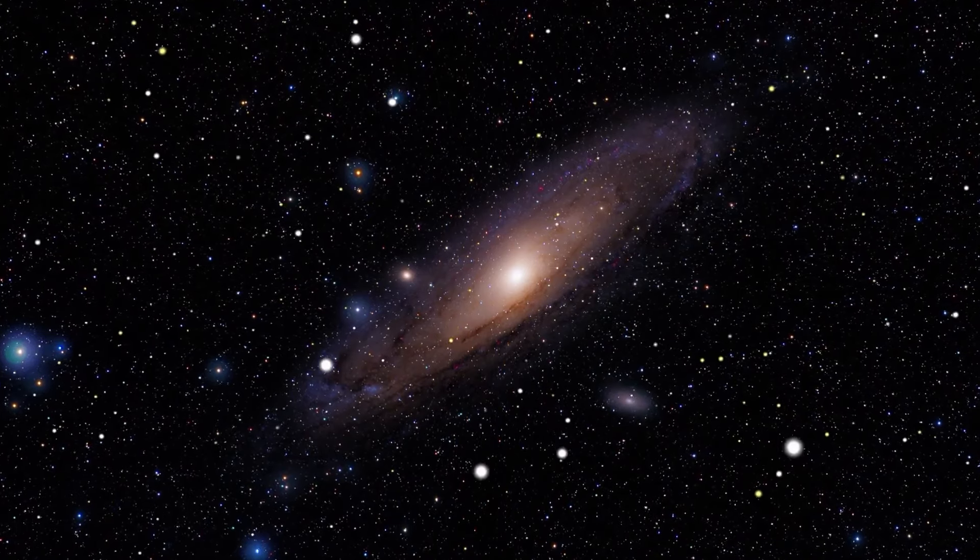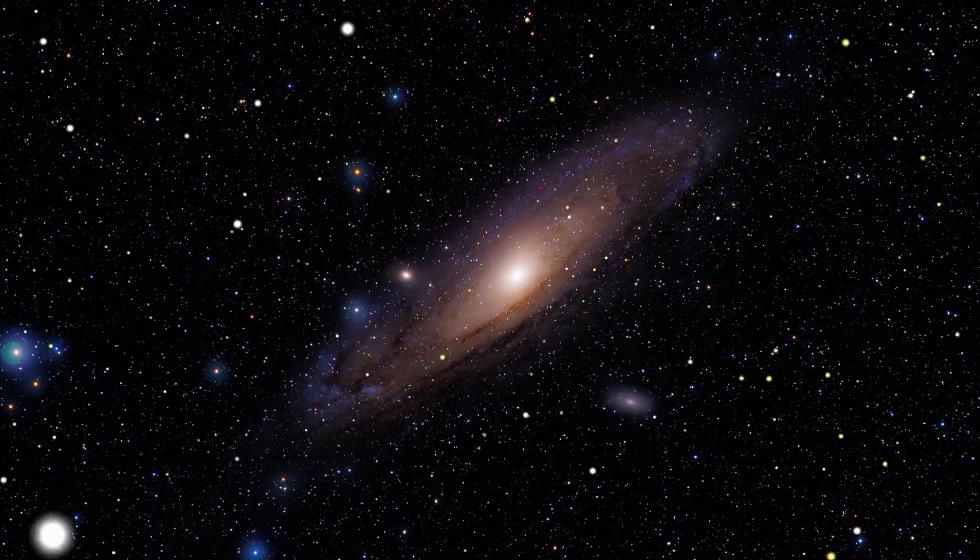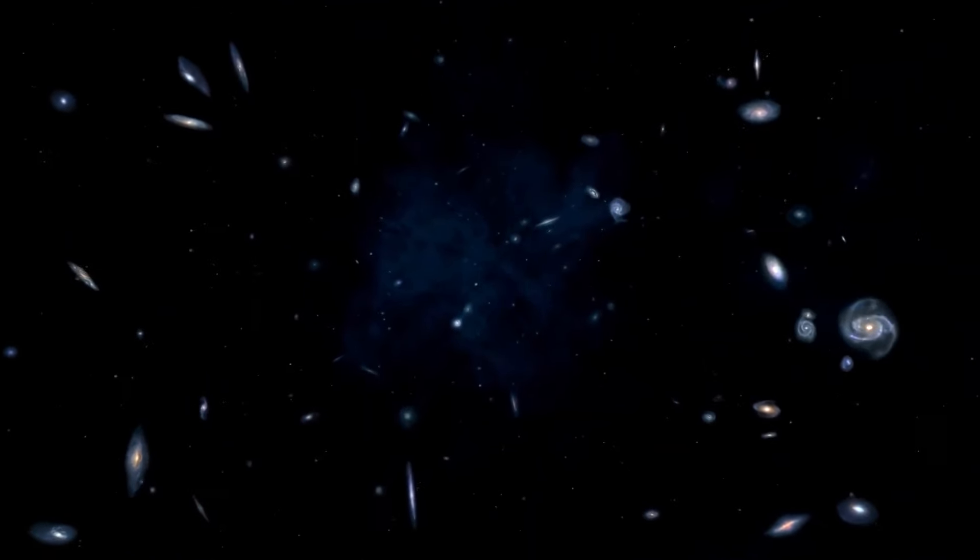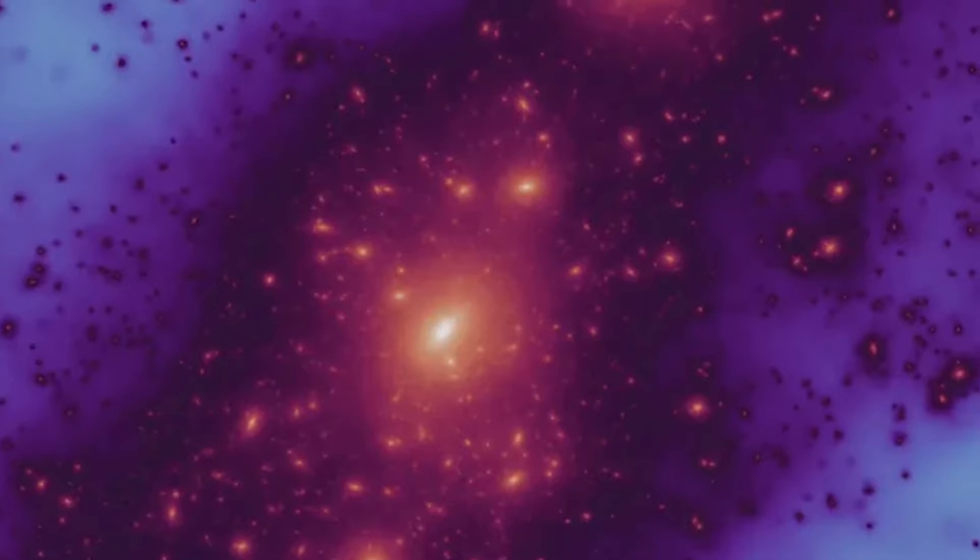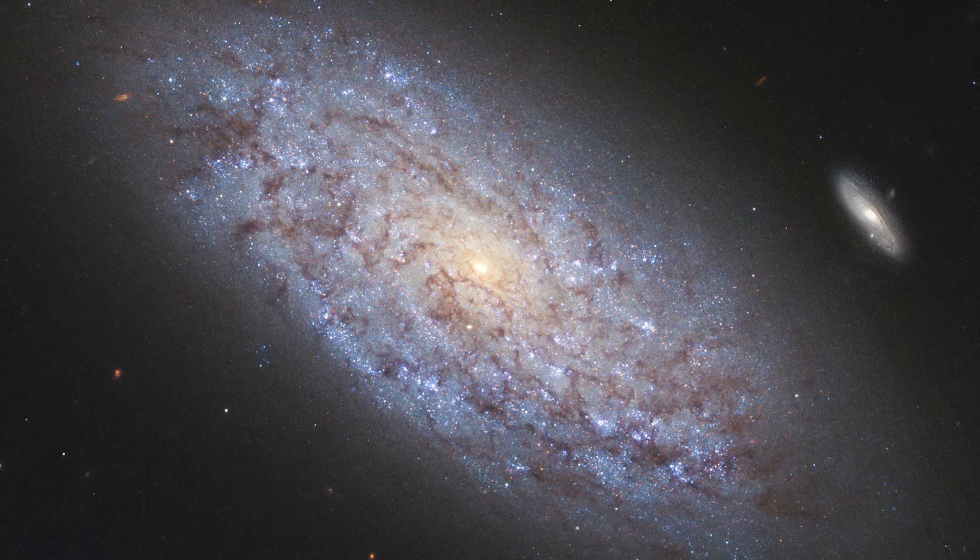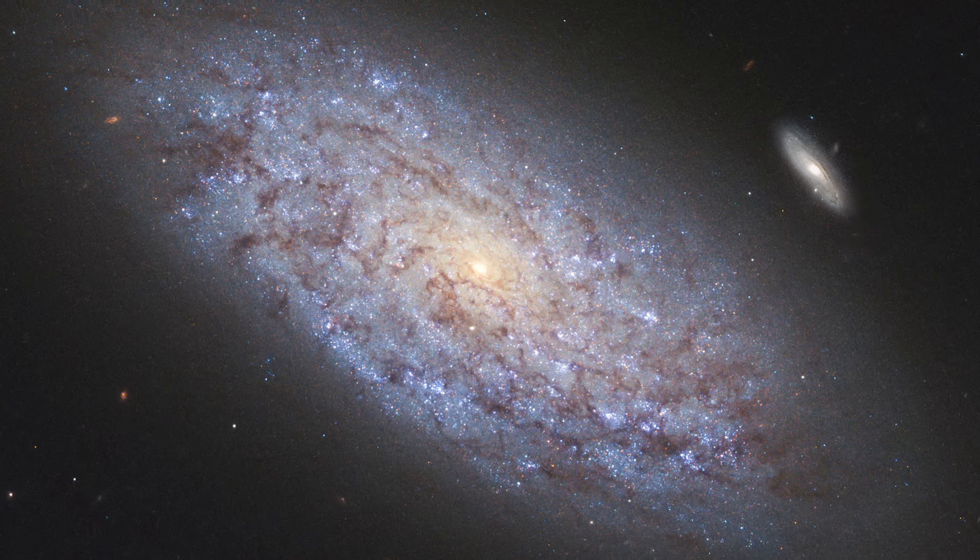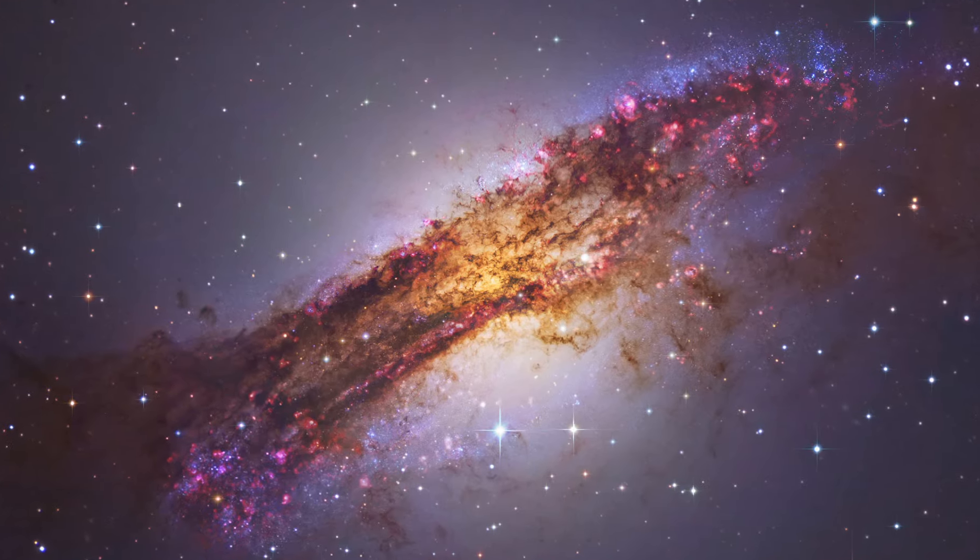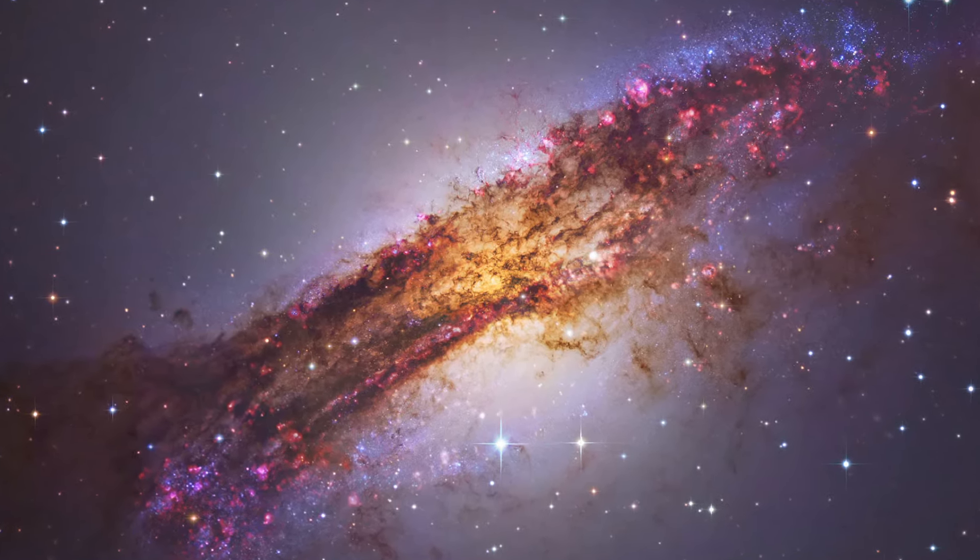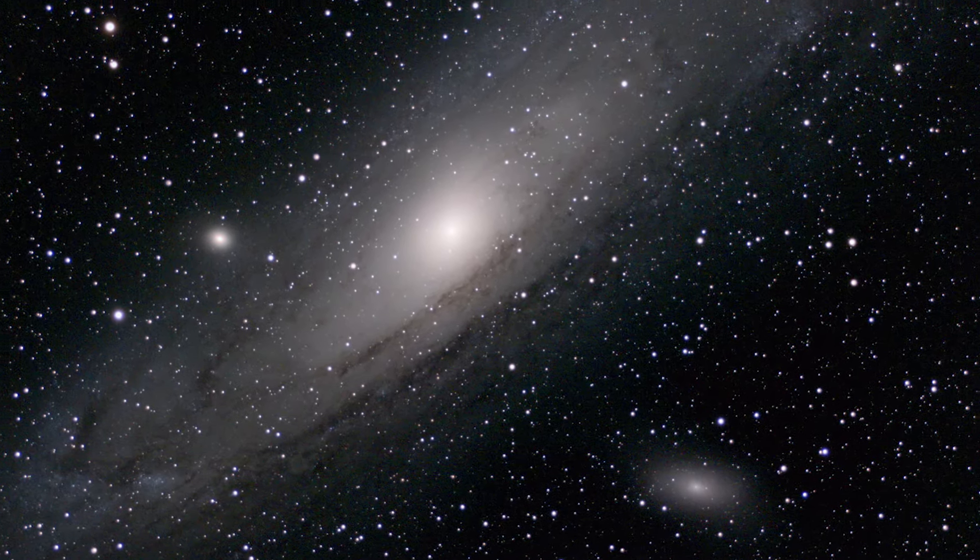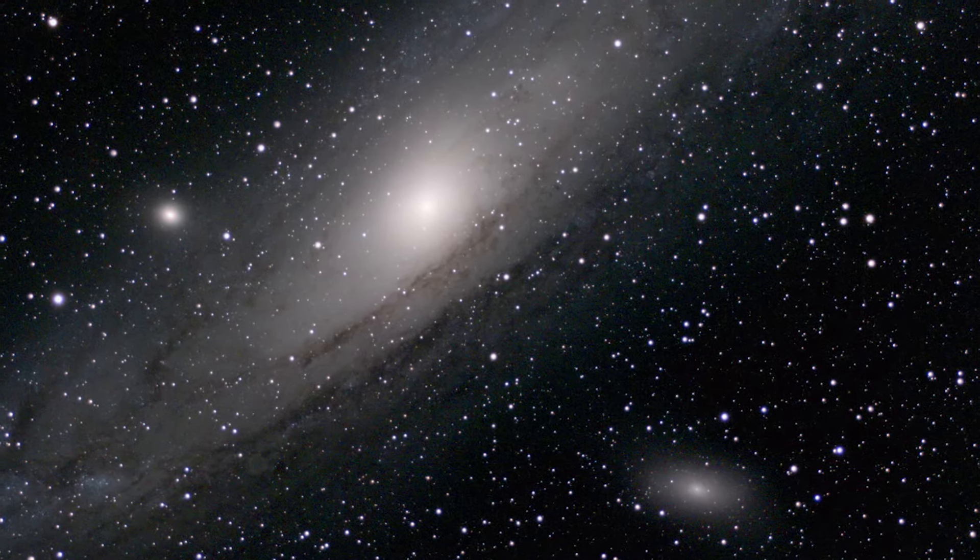They typically have lower masses, lower luminosities, and smaller sizes compared to their host galaxies. Satellite Galaxies can range in size from dwarf galaxies containing just a few million stars to larger galaxies with tens of billions of stars. Many large galaxies, including the Andromeda Galaxy, are surrounded by numerous satellite galaxies.